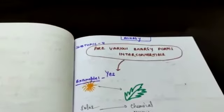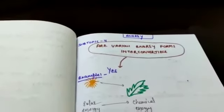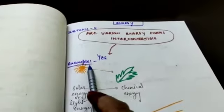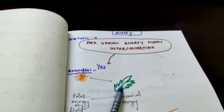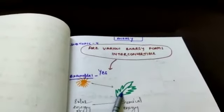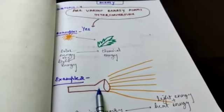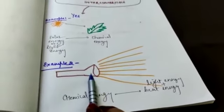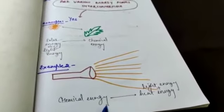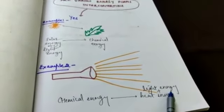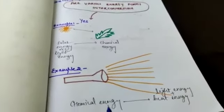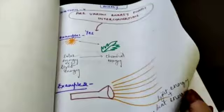Next we have subtopic number 4. Are various energy forms interconvertible? So what is your answer? Yes. Very good. Example, the sun and green plant. There is photosynthesis. So solar energy is converted into chemical energy. The next is about torch light. So here chemical energy in the battery of a torch is converted into light energy, heat energy. So yes, one form of energy converts into another form of energy.